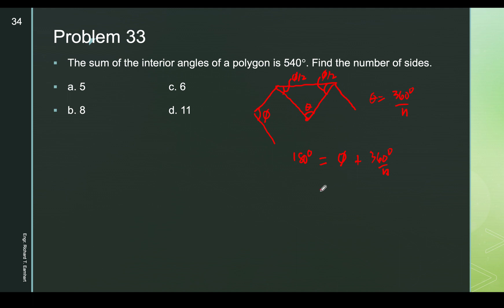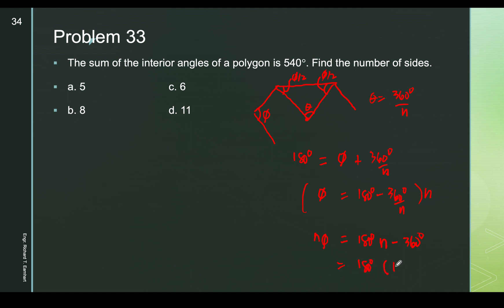Solving for the interior angle gives 180° − 360°/n. The sum of the interior angles is n times this single interior angle, which gives 180n − 360 degrees, or equivalently 180(n − 2) degrees. This is the formula for the sum of interior angles.